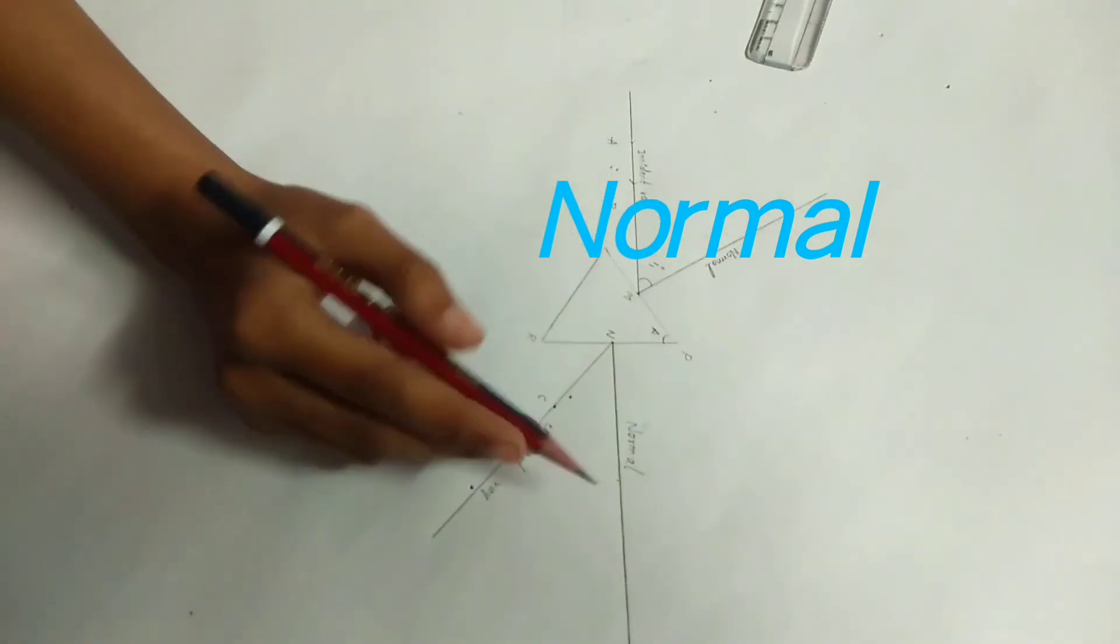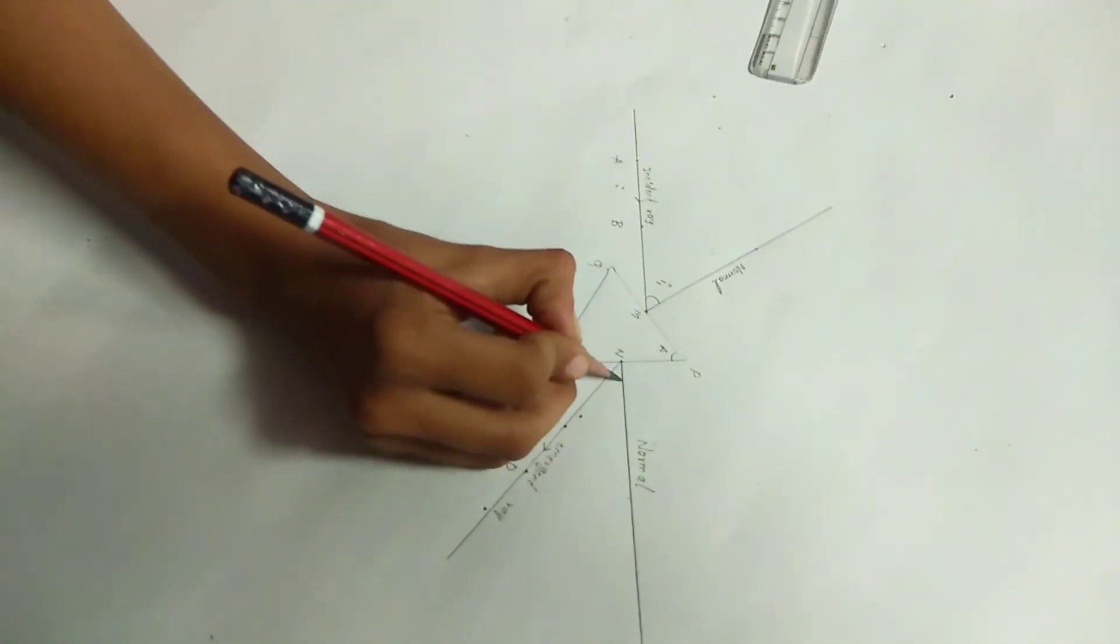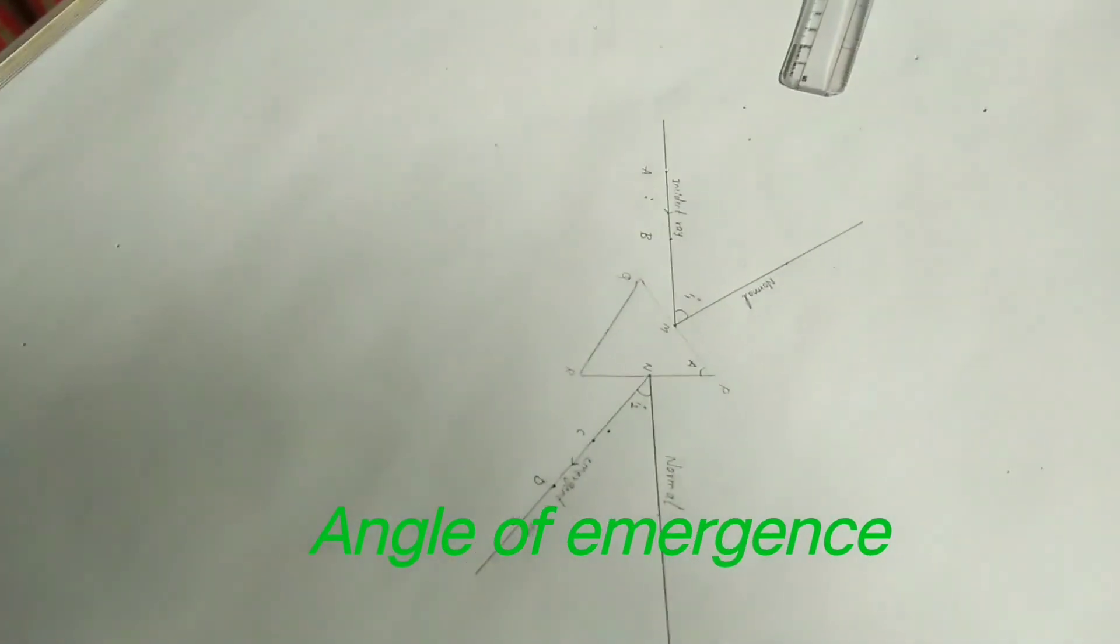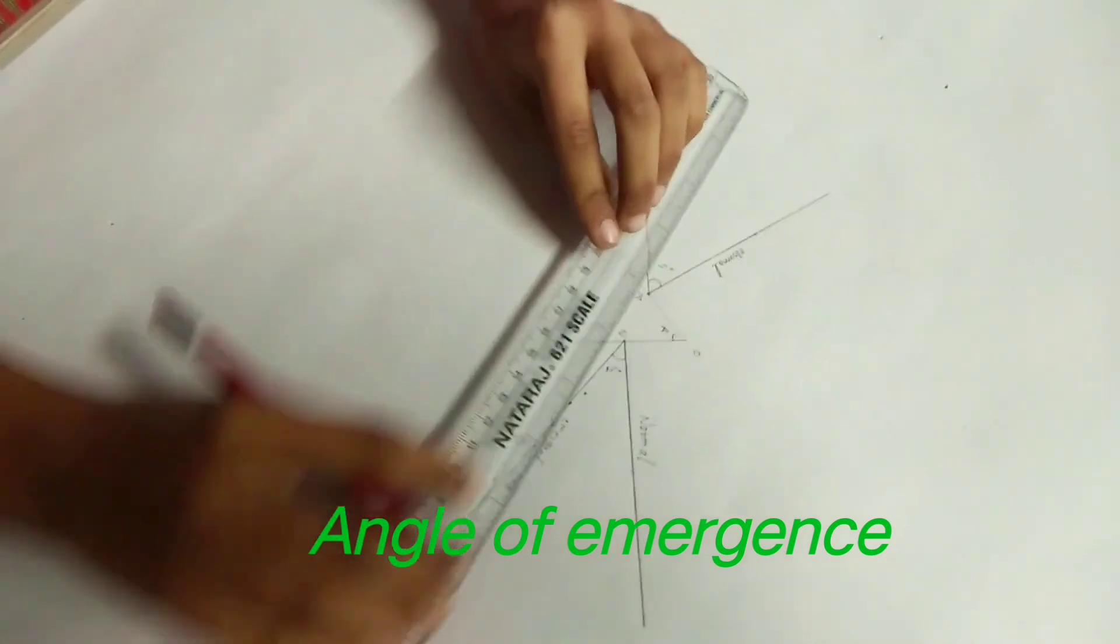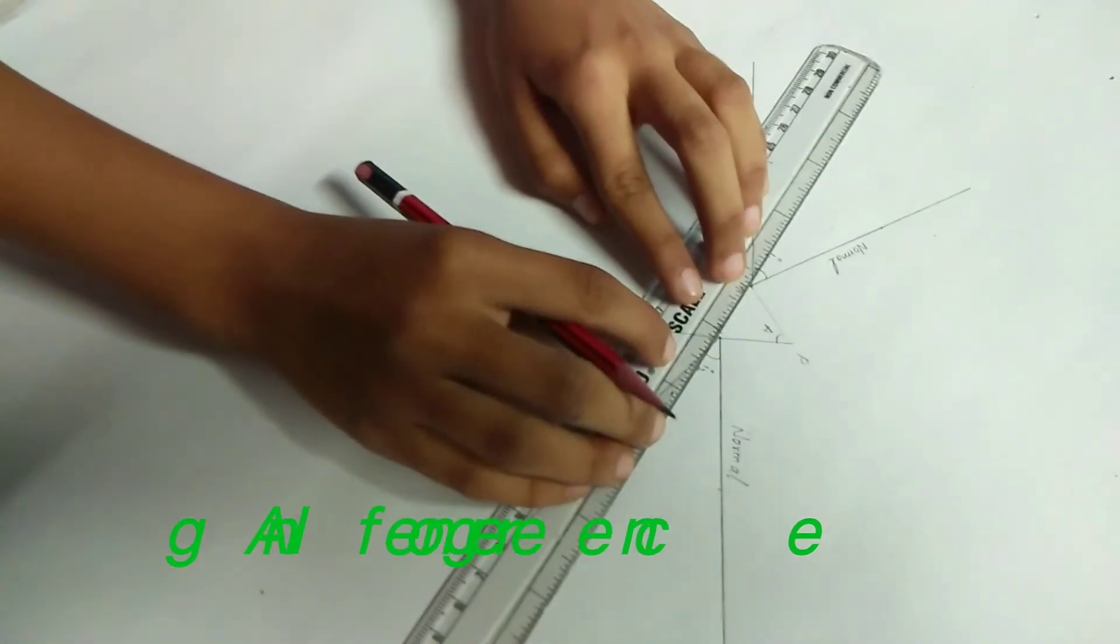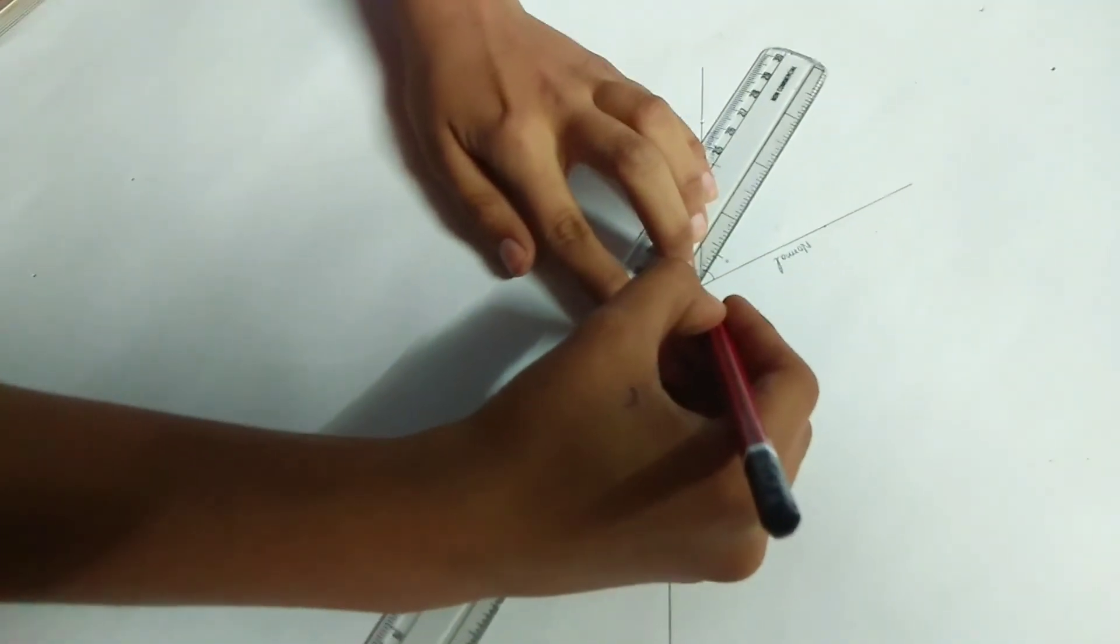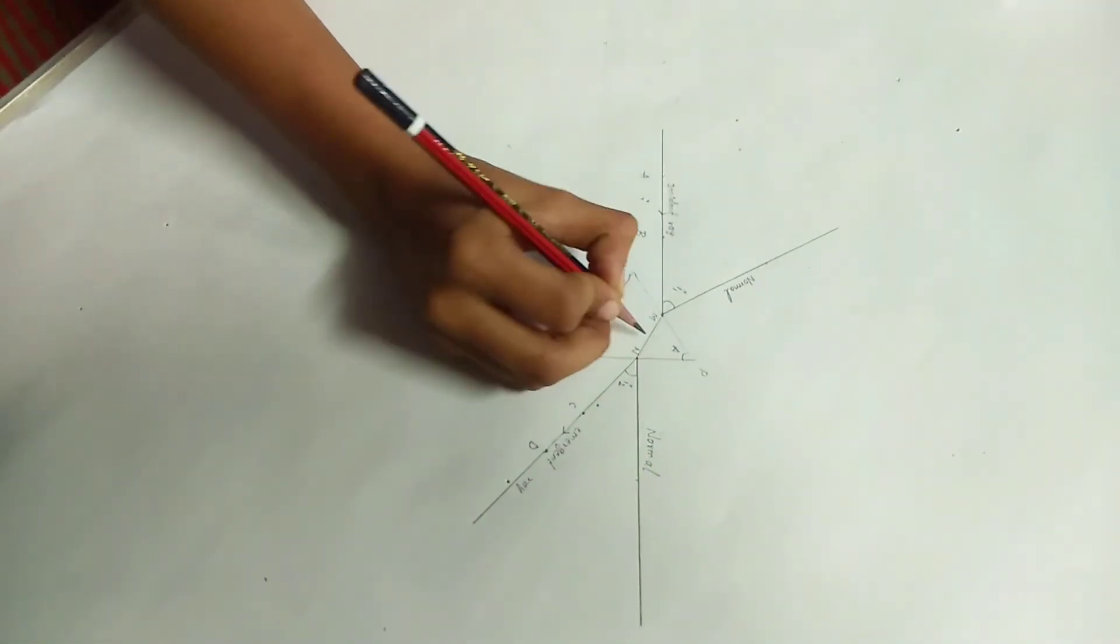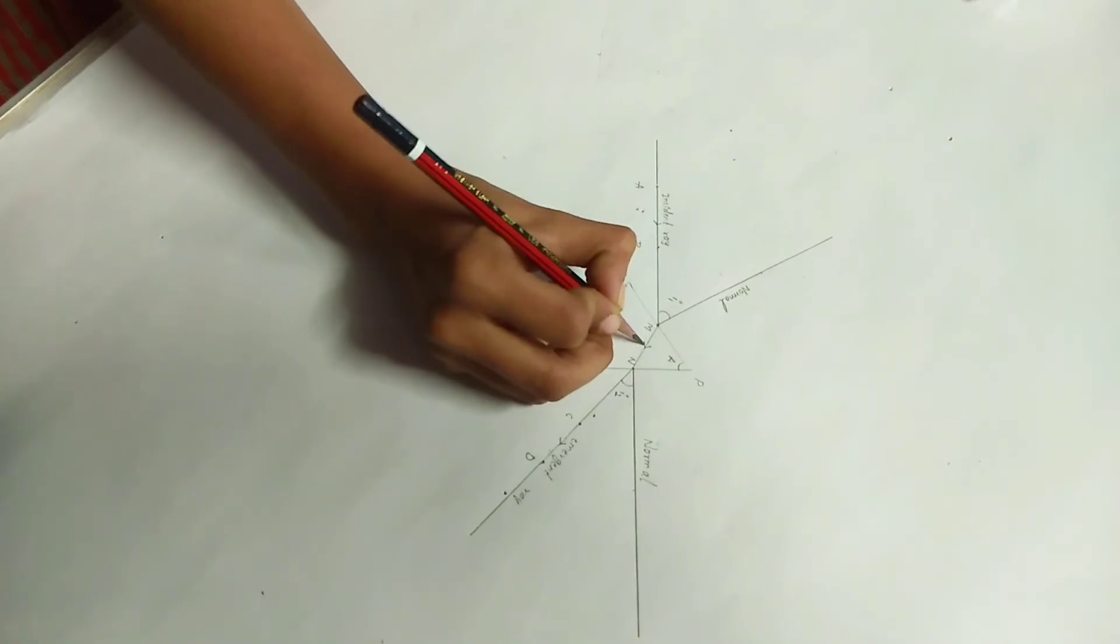The angle between emergent ray and normal is an angle of emergence which is denoted by I2. Join MN which shows the path of light passing through the prism.